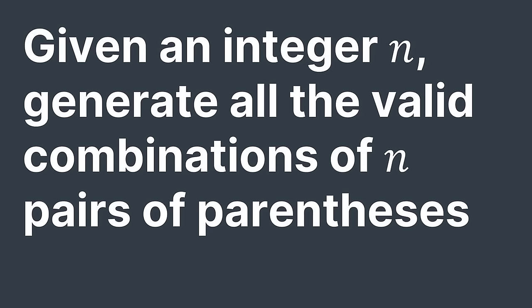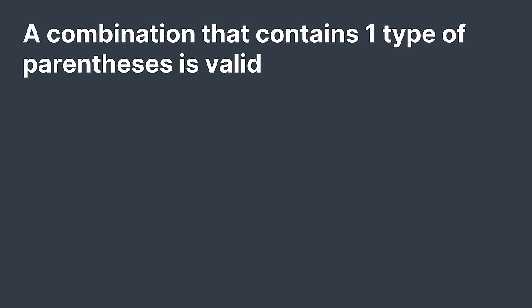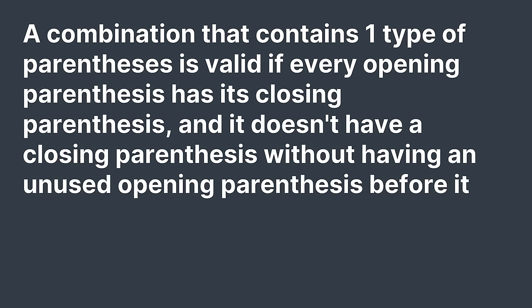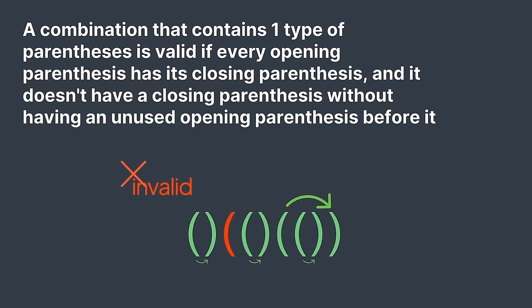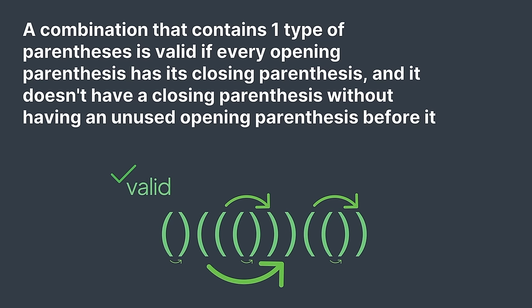We are given an integer n and asked to generate all valid combinations of n pairs of parentheses. For example, with n=3, here are all the valid combinations. A combination is valid if every opening parenthesis has its closing parenthesis, and there is no closing parenthesis without an unused opening parenthesis before it. An invalid example: opening parentheses without closing ones. Another invalid: a closing parenthesis without an unused opening one before it. A valid example: each opening parenthesis has its closing one.